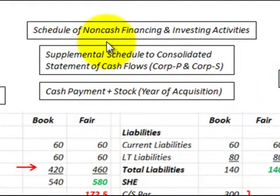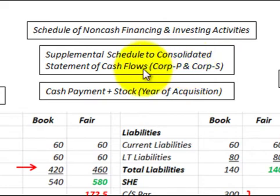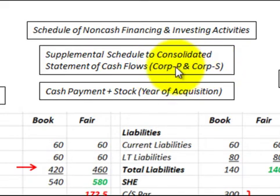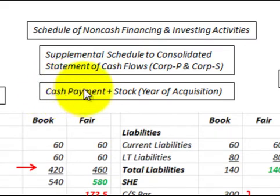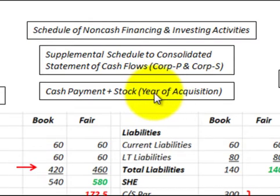Here we're going to be looking at a schedule of non-cash financing and investing activities. This is a supplemental schedule to the consolidated statement of cash flows. In our example, Corporation P, the parent, and Sub-Corporation S, the subsidiary, are going to present consolidated financial statements for the year. The example is based on Corporation P making a cash payment plus issuing stock to purchase Sub-Corporation S in the year of acquisition.